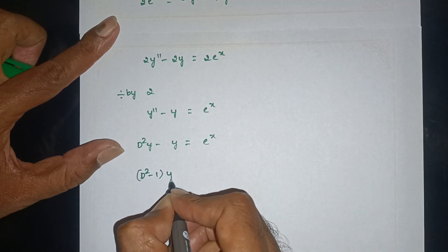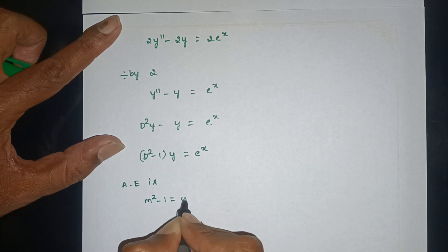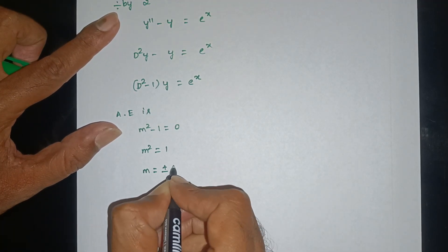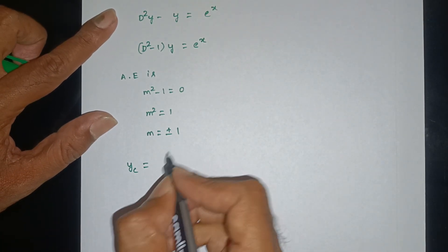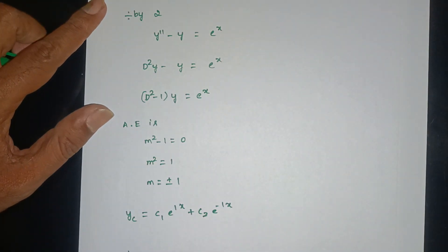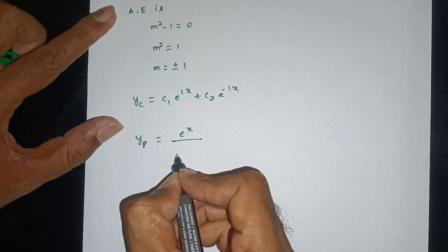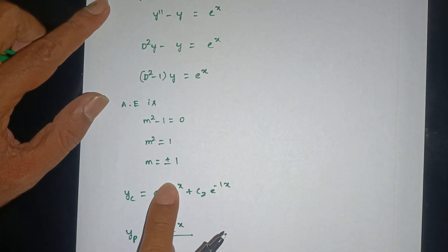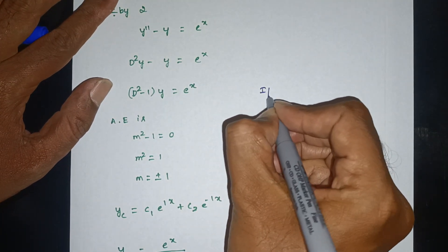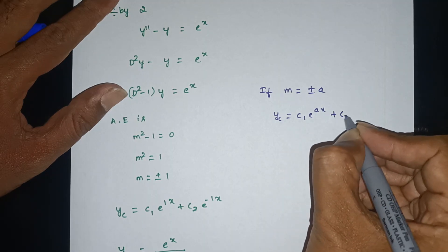We write this as (d squared minus 1) times y equals e to the power x. The auxiliary equation is m squared minus 1 equals zero, so m squared equals 1, giving m equals plus or minus 1. Therefore the complementary function is yc equals c1 e to the power x plus c2 e to the power minus x.